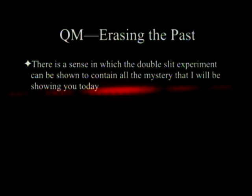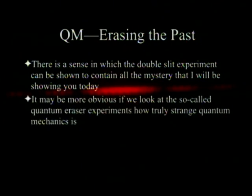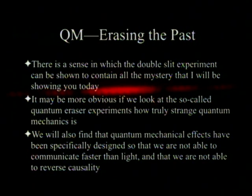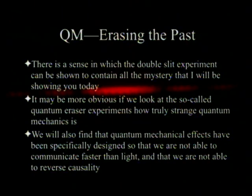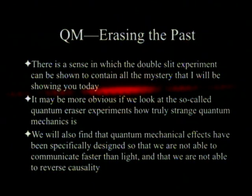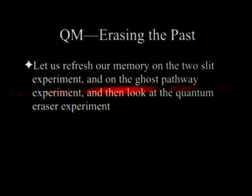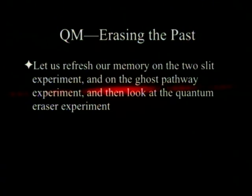There's a sense in which the double-slit experiment can be shown to contain all the mystery I'll be showing you today. It may be more obvious if we look at the so-called quantum eraser experiments. We will also find that quantum mechanical effects have been specifically designed so that we are not able to communicate faster than light and not able to reverse causality. Let's refresh our memory on the two-slit experiment and the ghost pathway experiment, and then look at the quantum eraser.